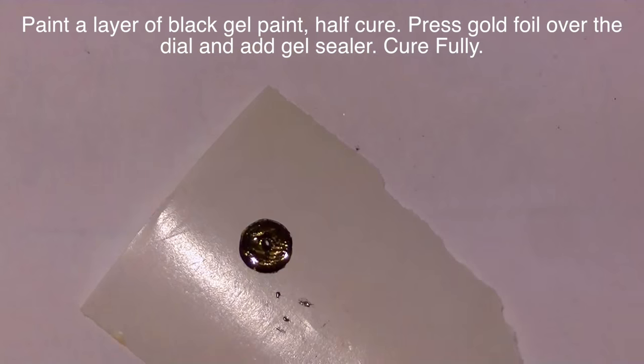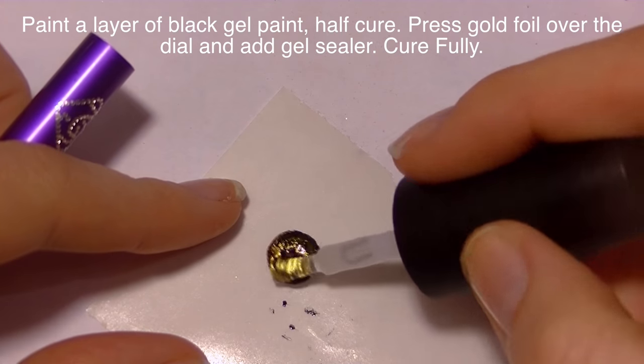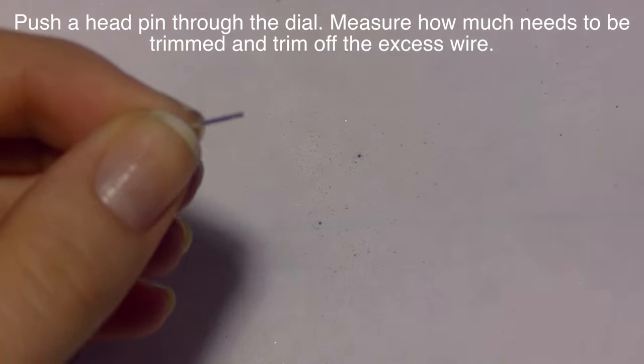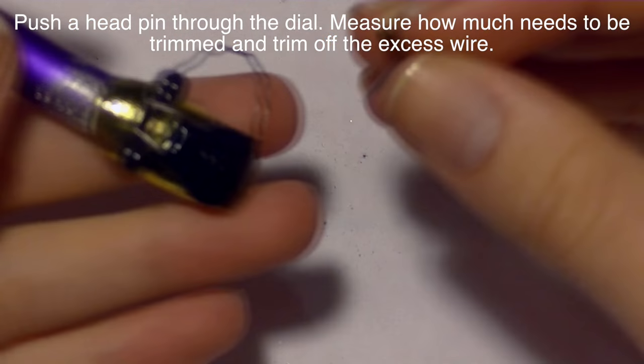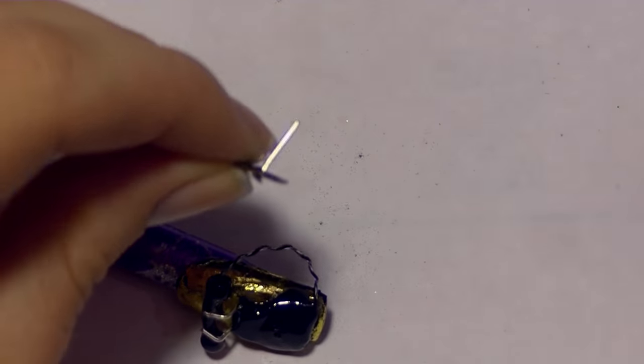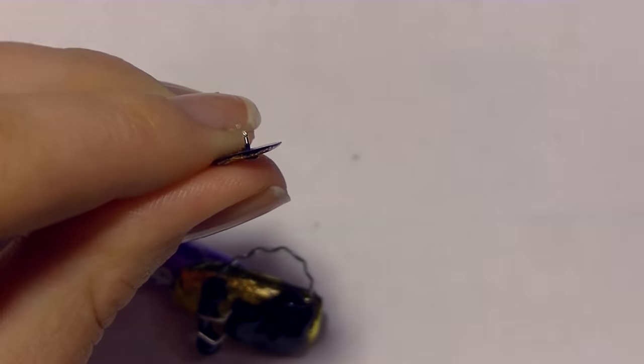I'm going to paint that with some black gel paint, cure it, press a piece of foil over it, add gel sealer, cure it again. Then we're going to put our phone together. First I'm going to take a head pin and put it in just to make sure it goes through the hole in my dial. Then I'm going to fit it to see if it goes into that hole that we created on the phone as well. Cut it down to length.